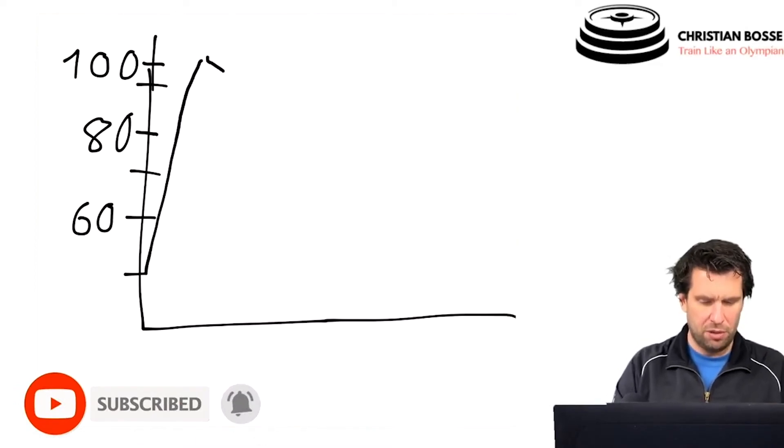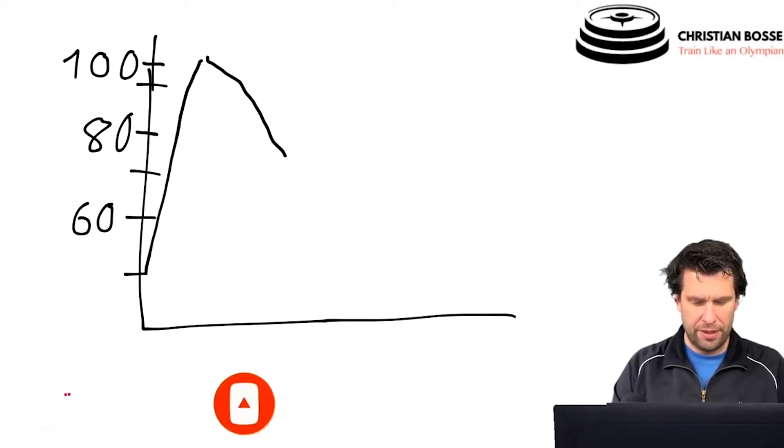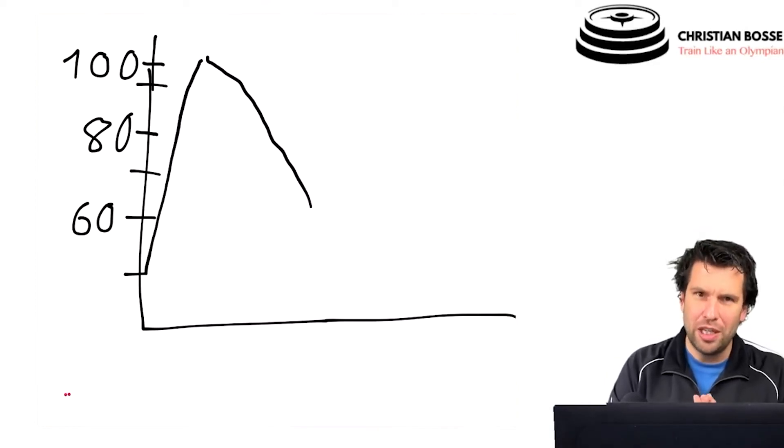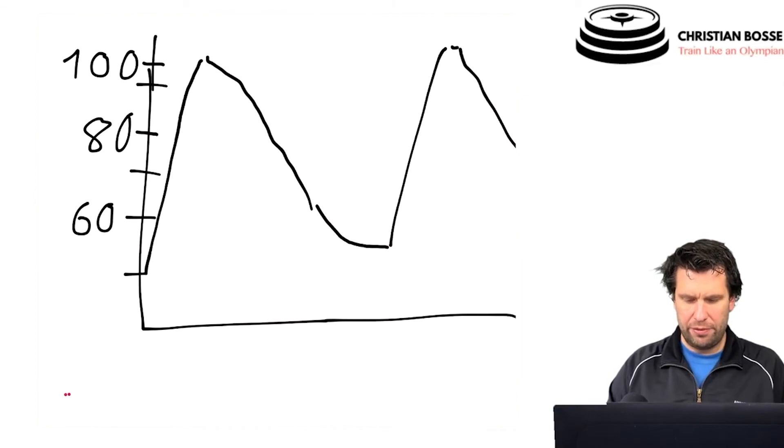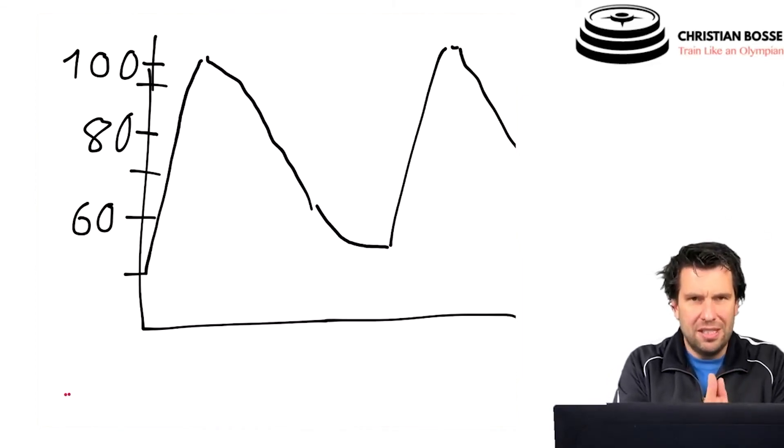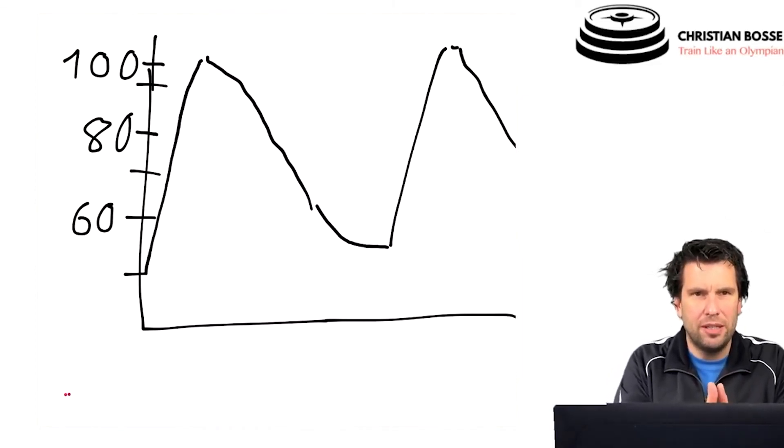And then you have complete rest. Again, now I changed it—we're not working at percentage of the maximum heart rate. We're just looking at the intensity and then recovery. And then we have our next sprint, and again, recovery. So that's essentially what the repetition method is.